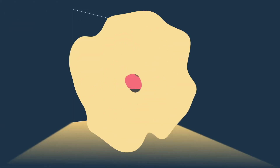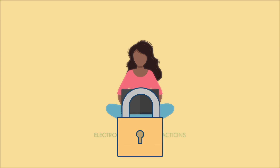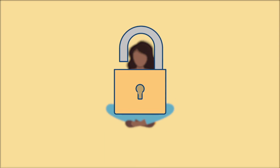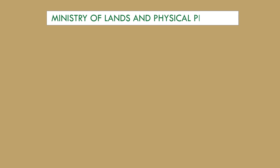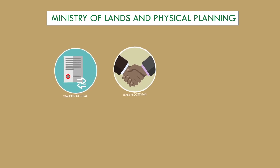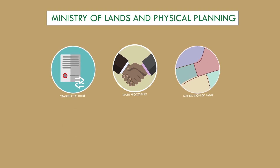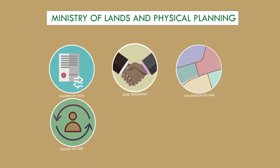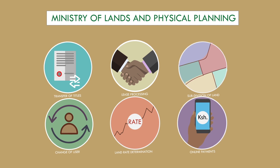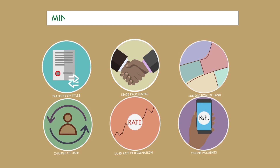NLIMS offers migration to electronic land transactions, making it easy to access various services provided by the departments within the Ministry of Lands and Physical Planning, including transfer of title deeds, lease processing, the subdivision of land, change of user, land rate determination, online payments, and much, much more.